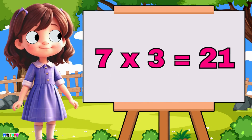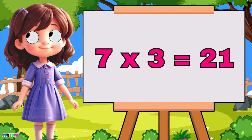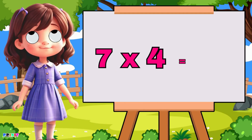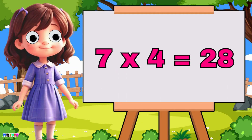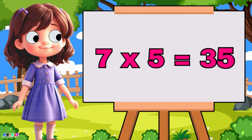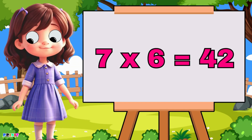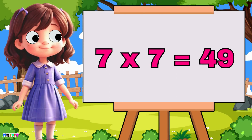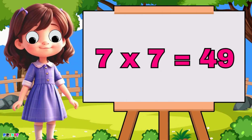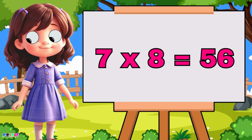Seven two's are fourteen, seven three's are twenty-one, seven four's are twenty-eight, seven five's are thirty-five, seven six are forty-two, seven seven's are forty-nine, seven eight's are fifty-six.